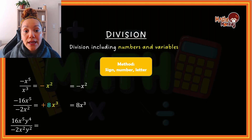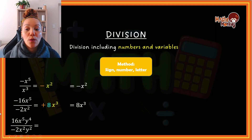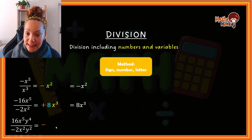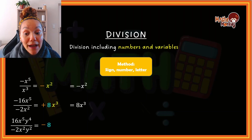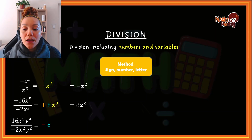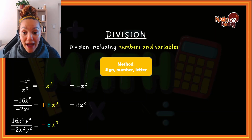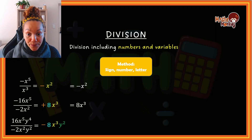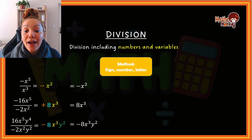I divide the signs first: positive divided by a negative is a negative. Then the numbers: 16 divided by 2 is 8. Then the variables — I have two variables so I need an answer for both. x to the 5: five minus two gives me x to the power of 3. y: four minus two gives me y to the power of 2. So the answer is negative 8x to the 3, y to the 2.